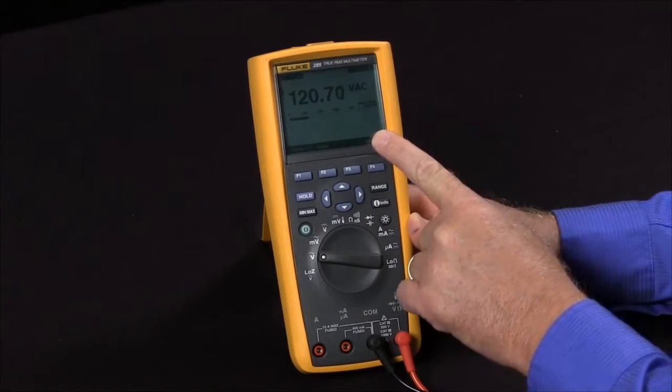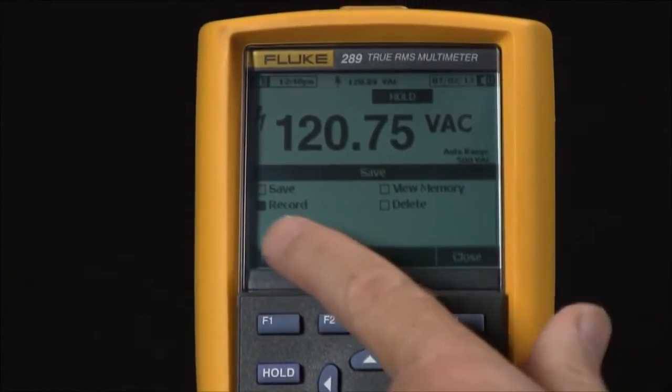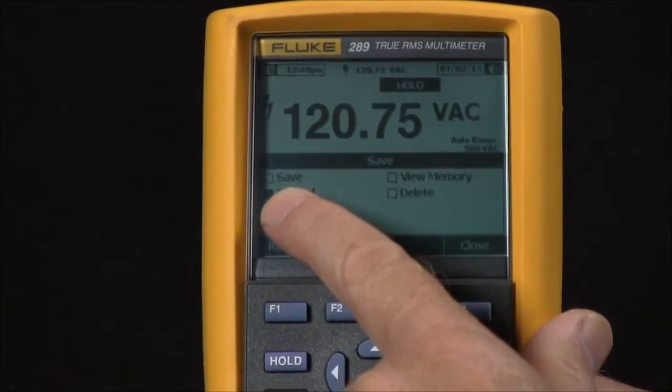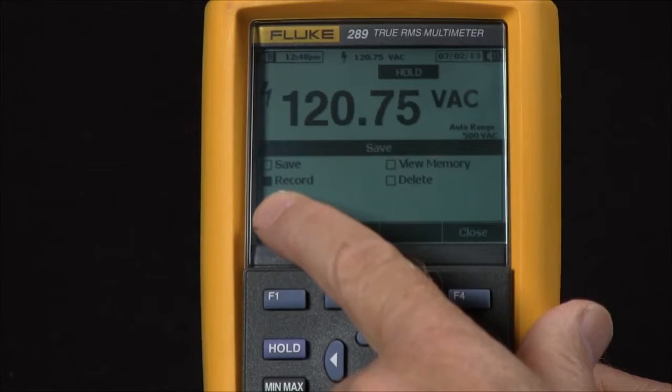To access this, I simply hit the save key and it brings up the record menu where I can either save one piece of data with a time and date stamp, or I can record over time.